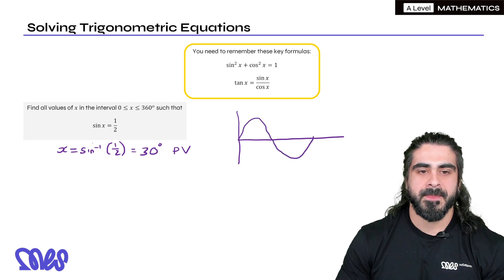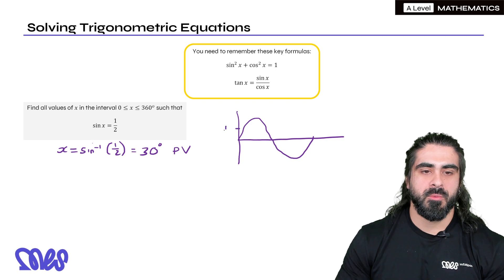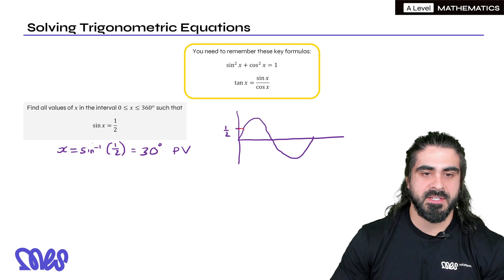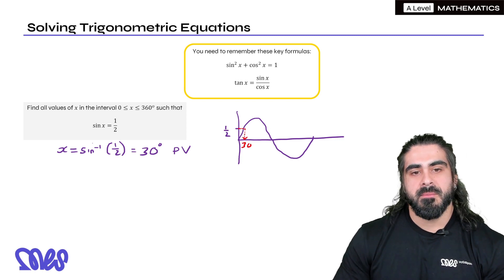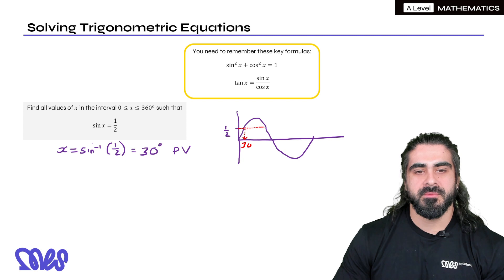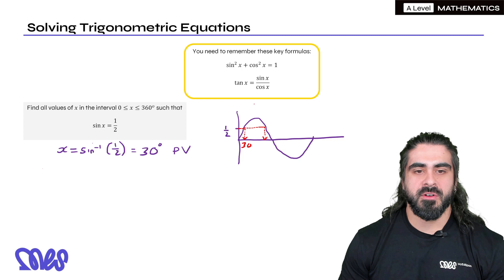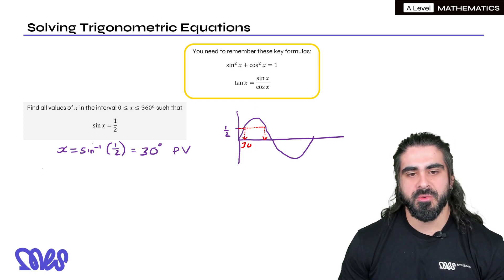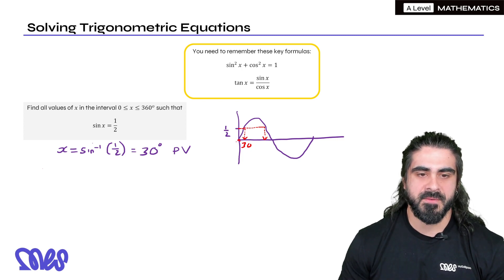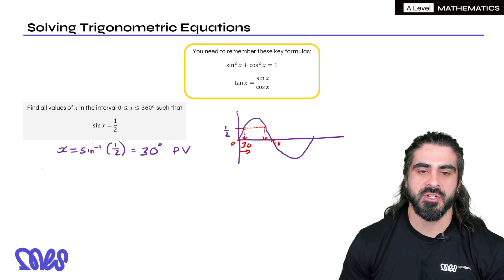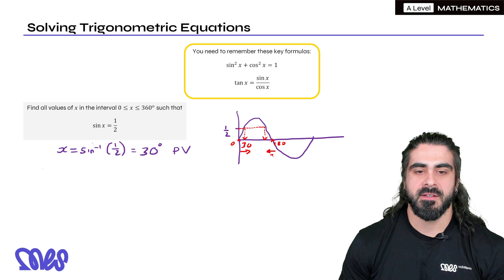Now there's a certain set of rules that I'm going to describe to you that you need to remember. Here's the sine graph and we have worked out that when we have a half, if you read it off the sine graph, it gives us 30 degrees. But if you notice you could carry on and find another value. How do we get that? The sine graph has symmetry at 90 degrees. So we can use that.